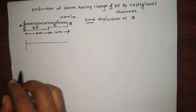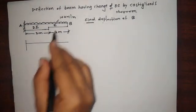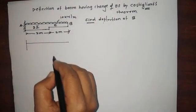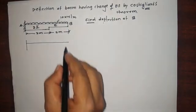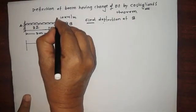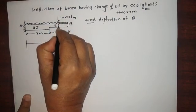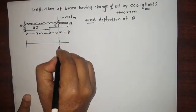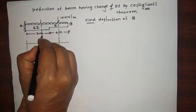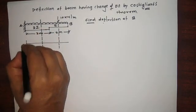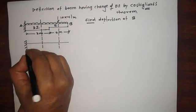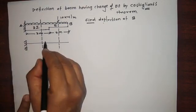The first step is to make sections in case of Castigliano's theorem. Apply the sections where the EI changes — here is one section for this EI, and the second section is for this EI.